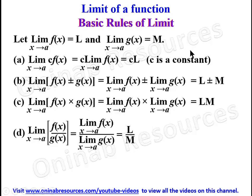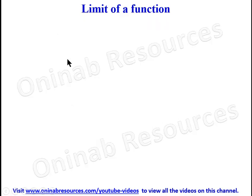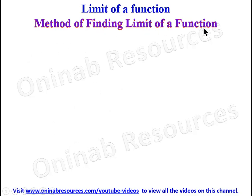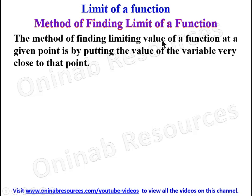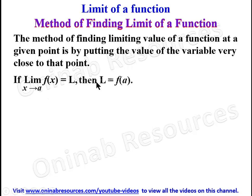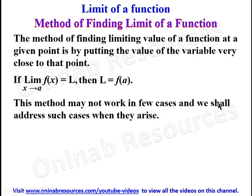These are the basic rules of limits. The method of finding the limiting value of a function at a given point is by putting the value of the variable very close to that point. That is to say, if we have the limit of f(x) as x tends to A equal to L, then L is simply f(A) — substitute the value of A for x to get the limiting value. This method may not work in a few cases, and we shall address such cases when they arise.